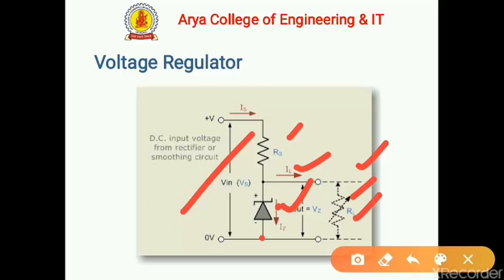IZ increases and is regulated to keep the output voltage constant. This is referred to as line voltage regulation. This is all about the voltage regulator application of the Zener diode.